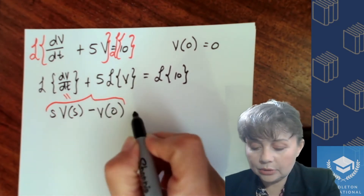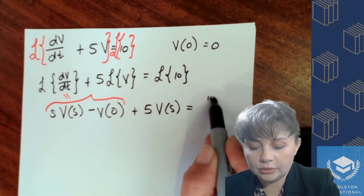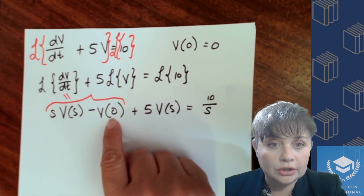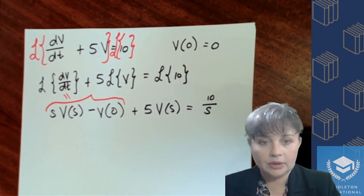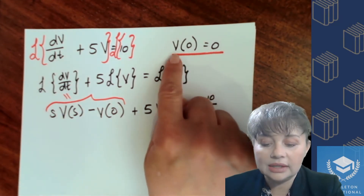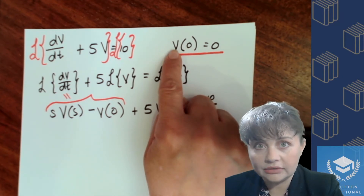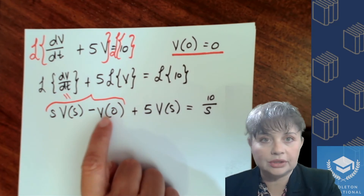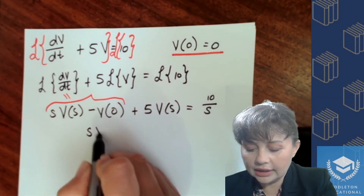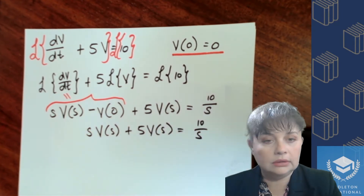In my second term I'm going to have plus five times the Laplace transform, and that is just going to be 10 over s. Now we can apply our initial condition. That initial condition means where time is zero, where our independent variable is zero, then v — our dependent variable — is also going to be zero. So that term matches up and becomes zero.